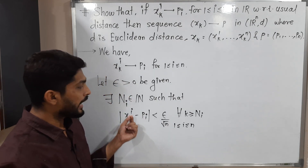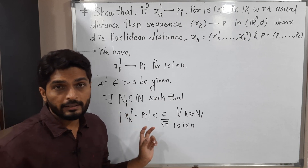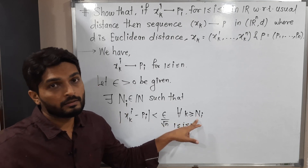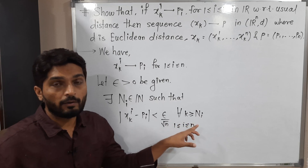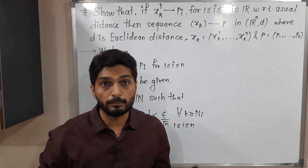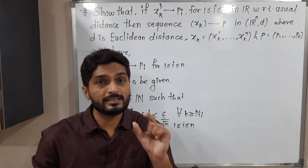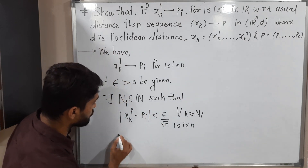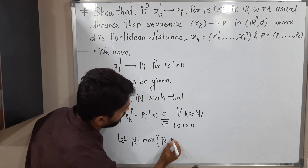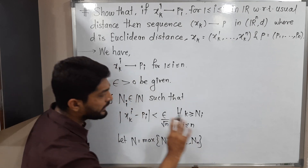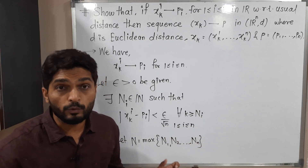So if i equals 1, the inequality holds for N1; if i equals 2, it holds for N2; and so on — we will have different natural numbers N1, N2, N3, and so on up to Nn. But all inequalities should be true for a single natural number. So I'm going to take the maximum. Let N equal the maximum of N1, N2, and so on Nn. That means all n inequalities will be true for this single N.